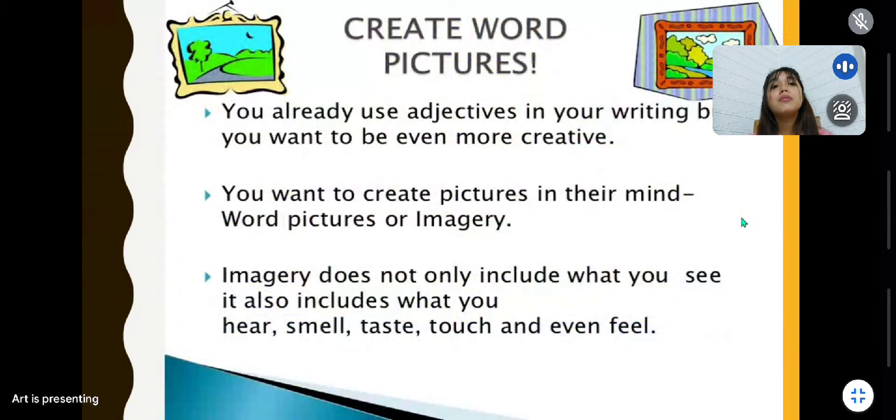Describing is telling. Now, describing is creating word pictures. You already use adjectives in your writing, but you want to be even more creative. You want to create pictures in their mind—word pictures or imagery. Imagery does not only include what you see. It also includes what you hear, smell, taste, touch, and even feel. I guess you are all familiar with imagery. We have discussed this before.